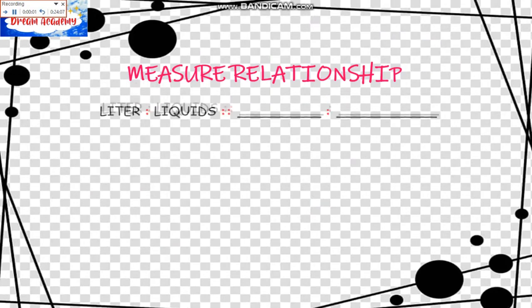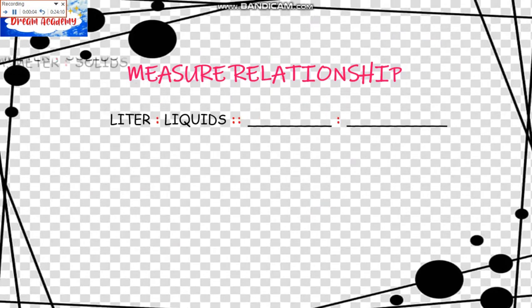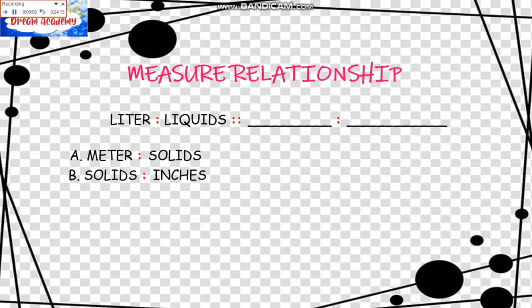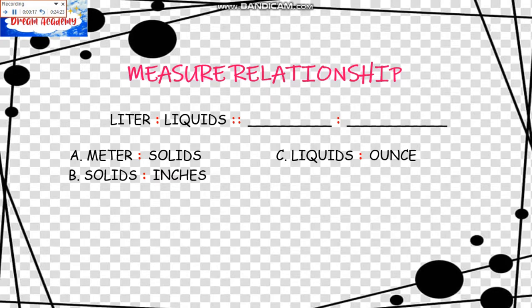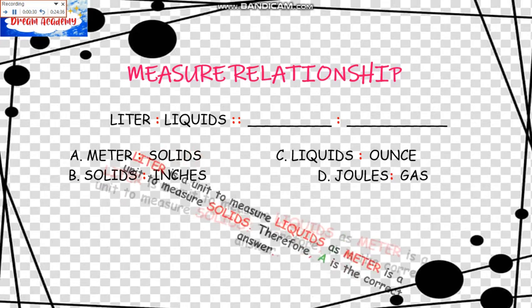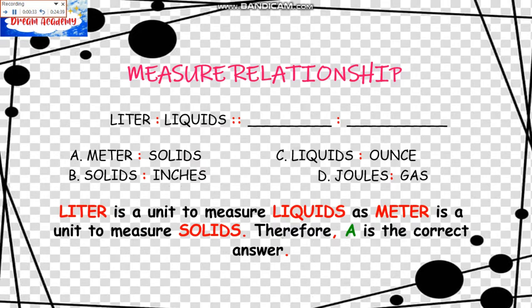Measure Relationship. The example is: Liter is to Liquids as blank is to blank. The choices are: A, Meter is to Solids; B, Solids is to Inches — the order is reversed; C, Liquids is to Ounce — also reversed order; D, Joules is to Gas. Joules is not a unit of measurement for Gas, and that leaves A as our answer. Liter is a unit to measure liquids as Meter is a unit to measure solids. Therefore, A is the correct answer.